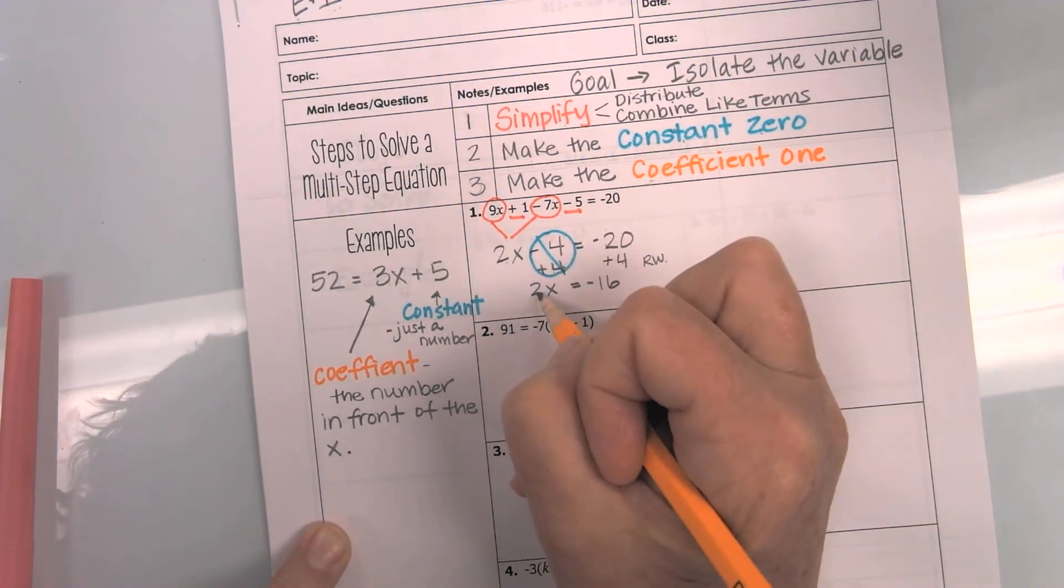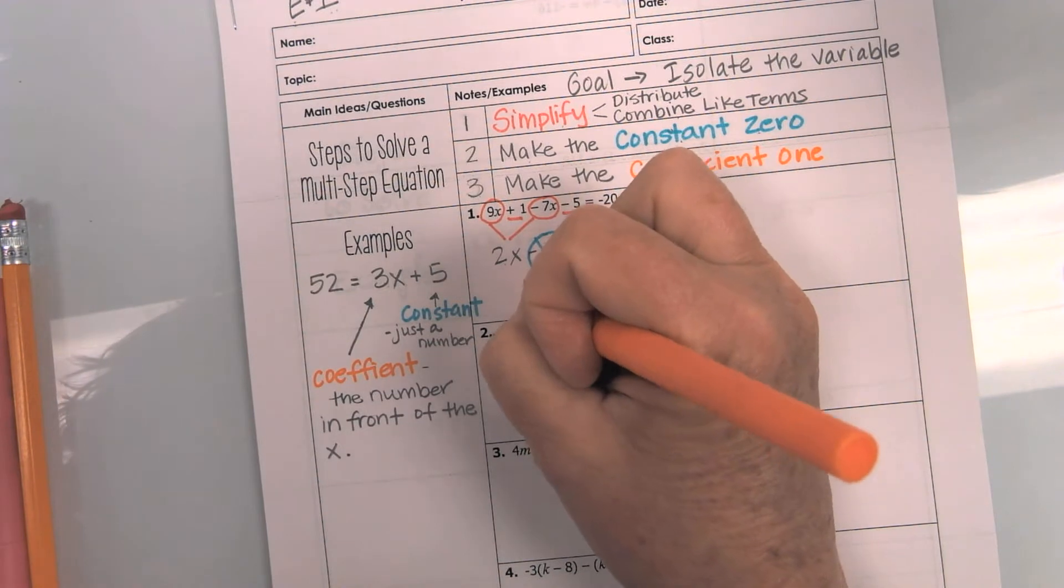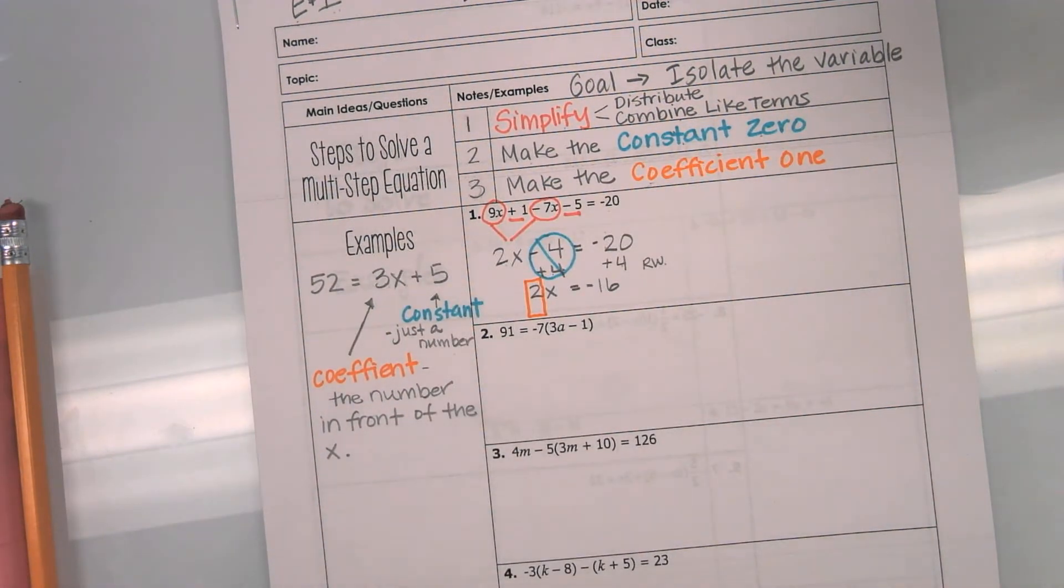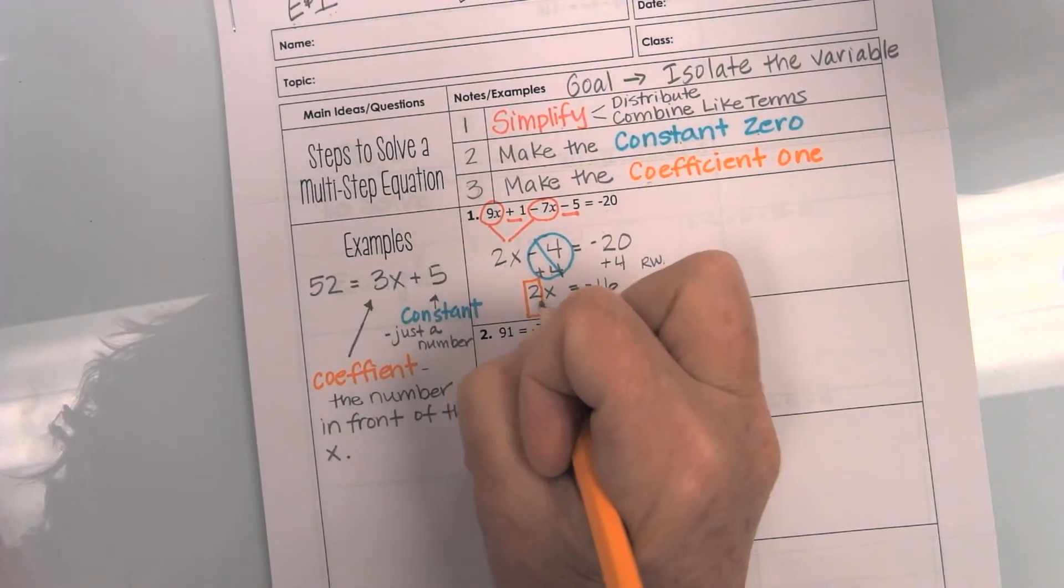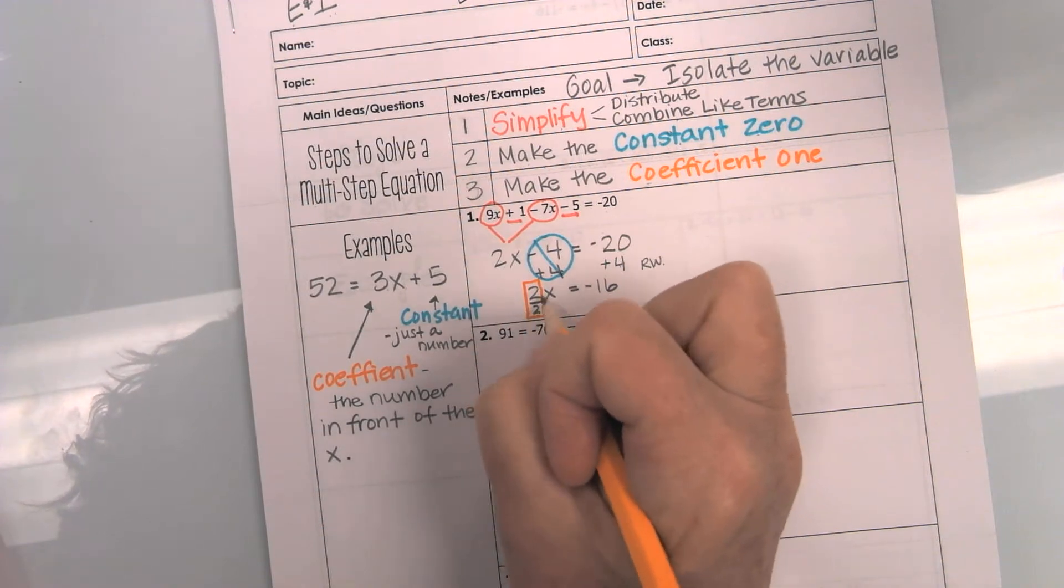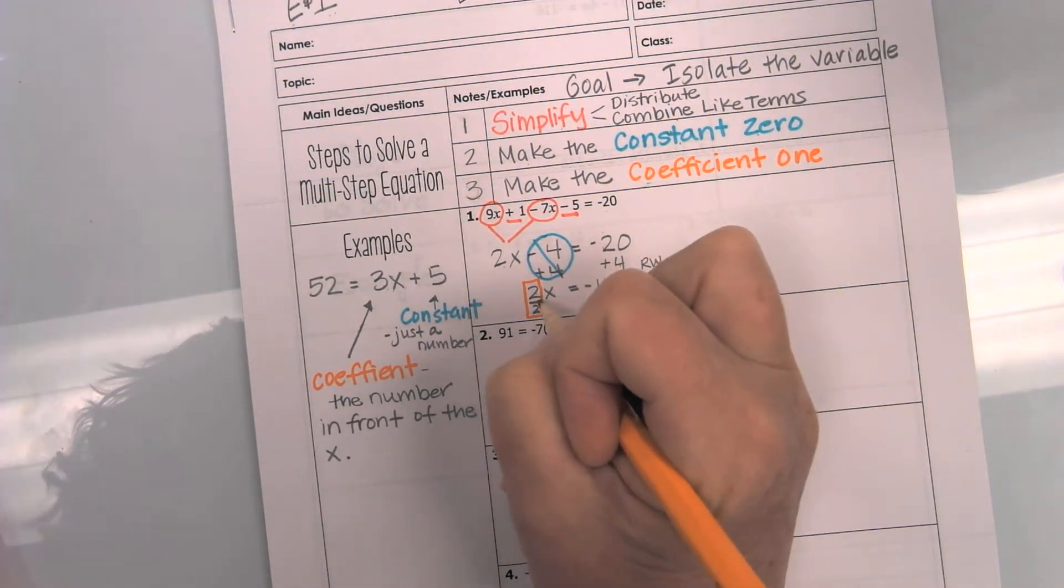make the coefficient 1. I need this to be a 1. Now, remember we have talked about giant ones. I do need this to be a 1. How do I make that a 1? Well, in this case, I'm going to divide by 2. Since this is 2 times x, I can undo it by dividing. And remember, 2 divided by 2 is a 1.